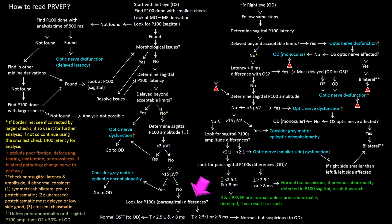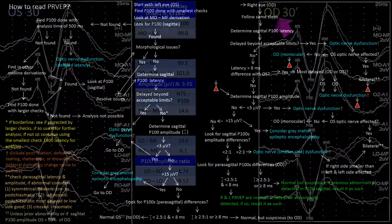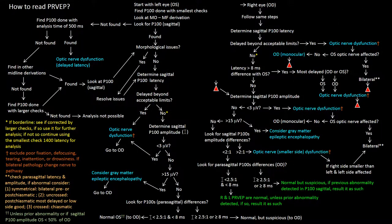After evaluation of the parasagittal P100s, we conclude that the left eye study is normal, as the left P100 sagittal is not less than 50% of the right P100 sagittal. The next step in the flowchart is to go to the right eye, so we go back to the panels. We start again, but this time with the right eye, indicated by the letters OD. We follow the same steps as we did for the left eye.